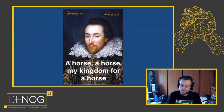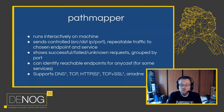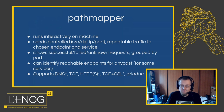PathMapper is a small tool designed to go through that space and try to find problematic tuples. It runs interactively on a machine, generates and sends controlled traffic — source port, destination IP, source port, destination port — to chosen endpoints and services. When done, it shows you what worked, what failed, and what it can't determine. It groups those by ports, and for some anycast services it can show you the list of endpoints it was actually able to connect to.